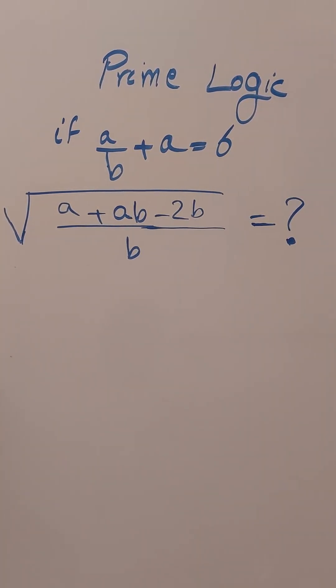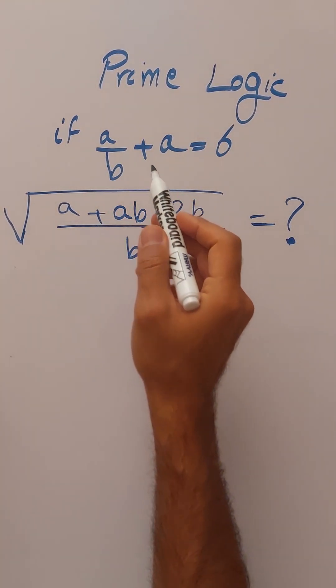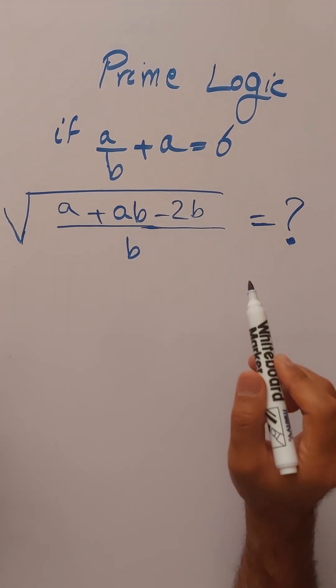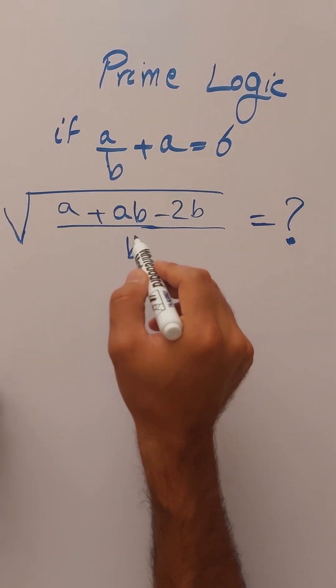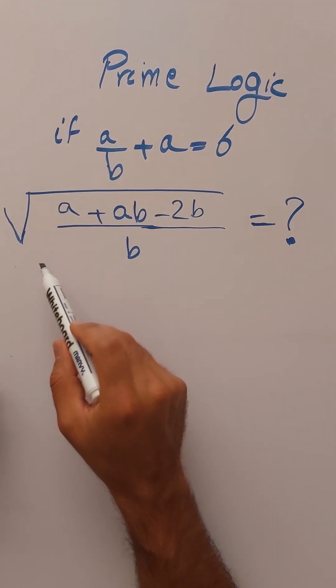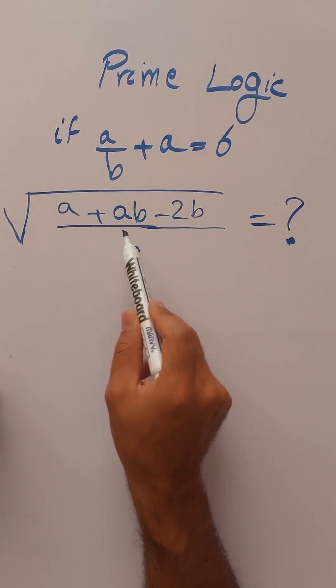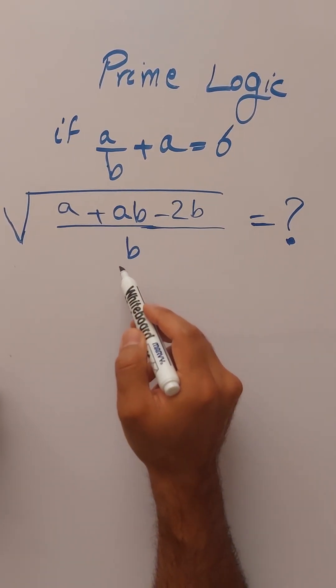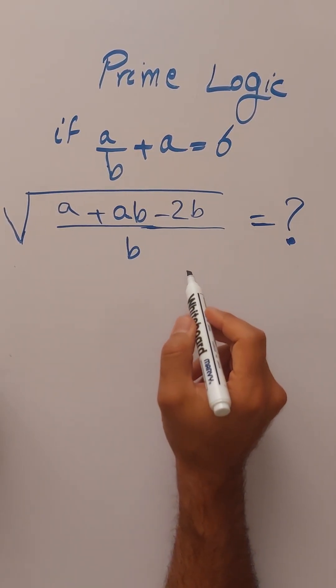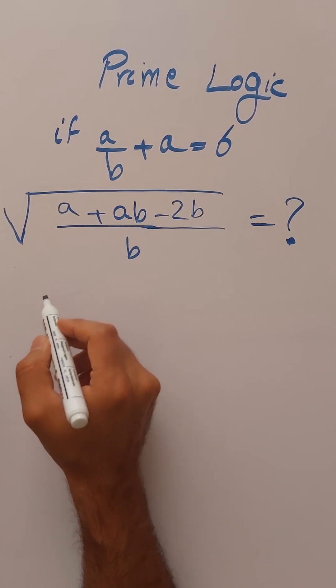So the question says, if A over B plus A equals 6, what's the value of this fraction under the square root sign? So square root of A plus AB minus 2B over B. What's the value of this term here?